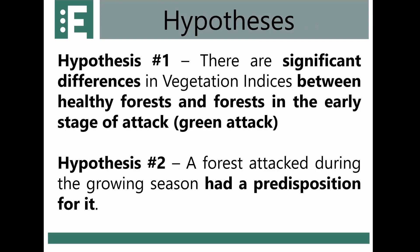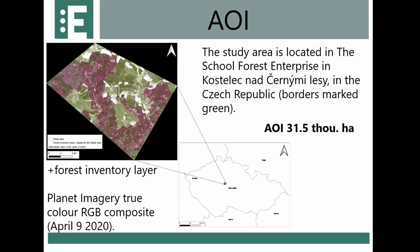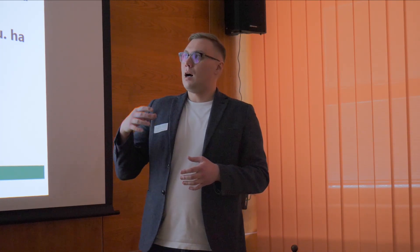We have two hypotheses. First, we want to track significant differences in vegetation indices between healthy forests and forests in an early stage of attack. Second, we look at the pre-attack predisposition phase. Our study area was close to Prague in the Czech Republic — a school forest enterprise owned and managed by our university, covering about 31.5 thousand hectares.